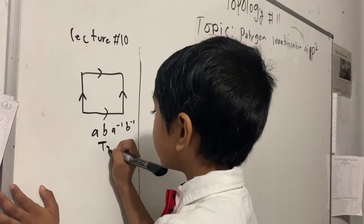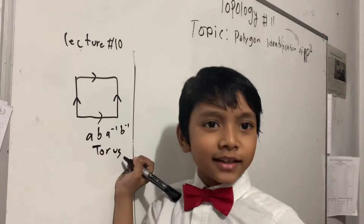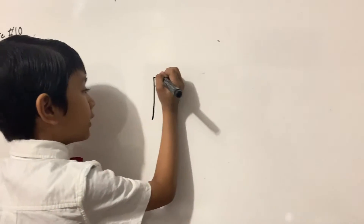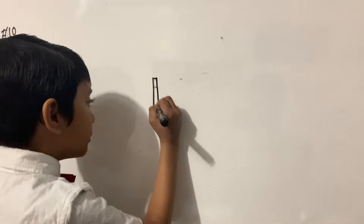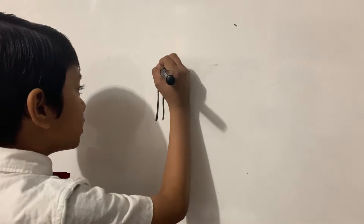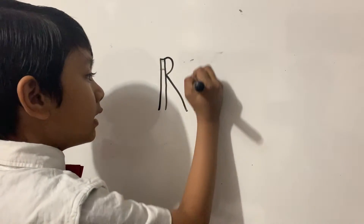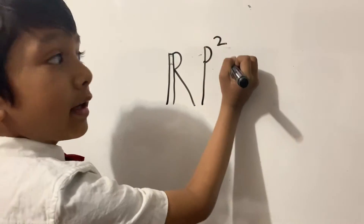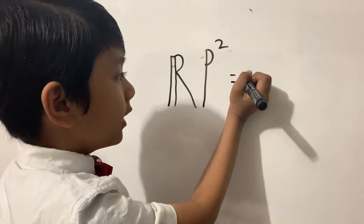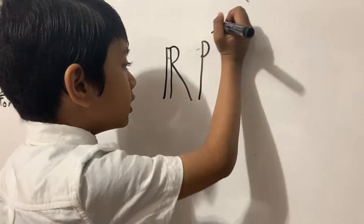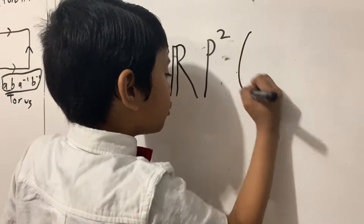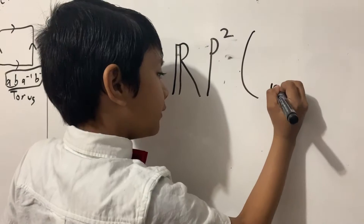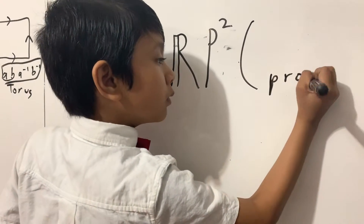And this is our torus. A projective plane symbol looks like an R with two legs and a P square. I'm going to write it anyway, even though I already wrote the symbol.